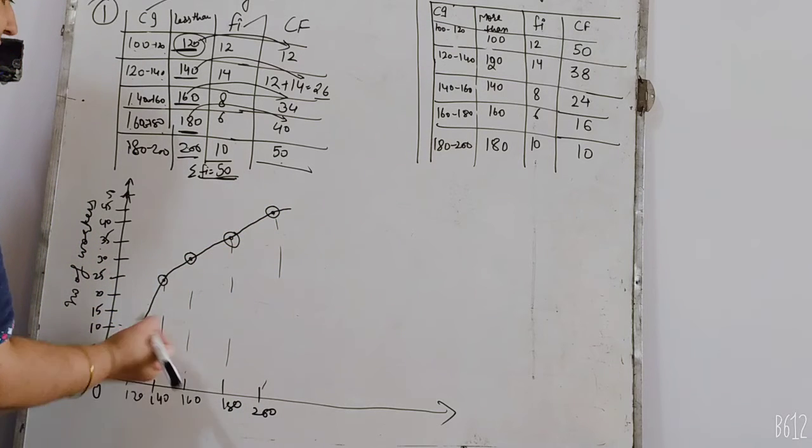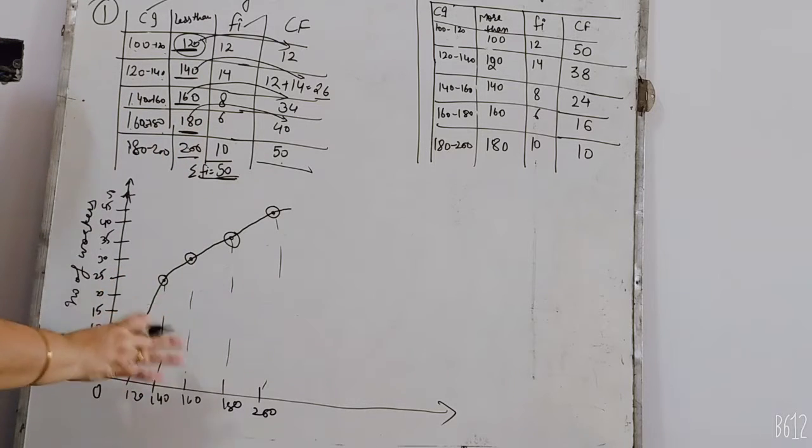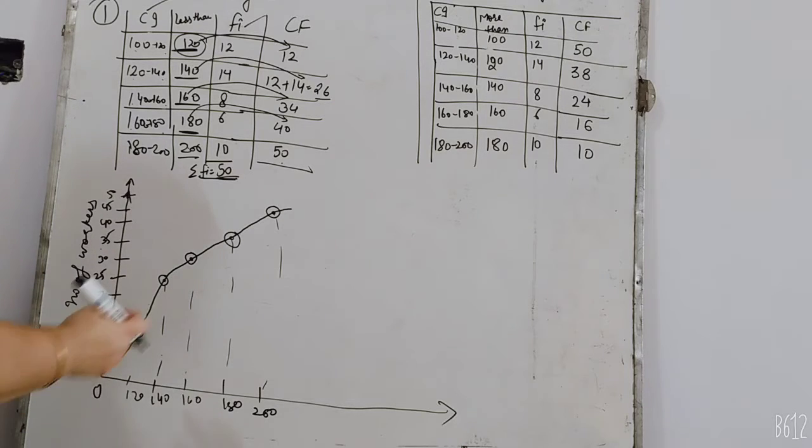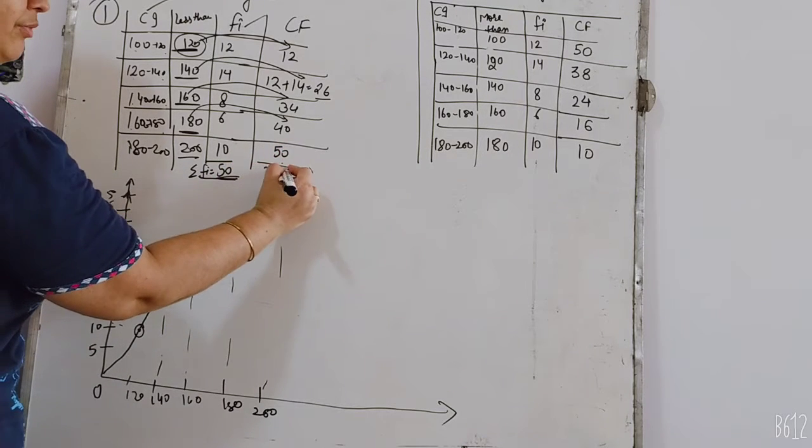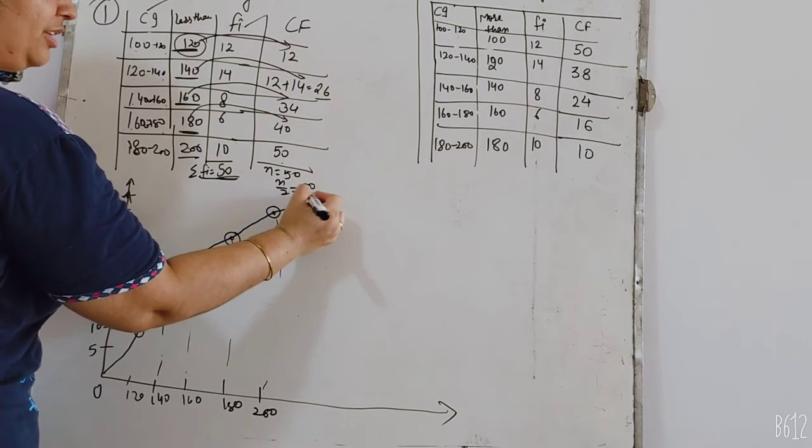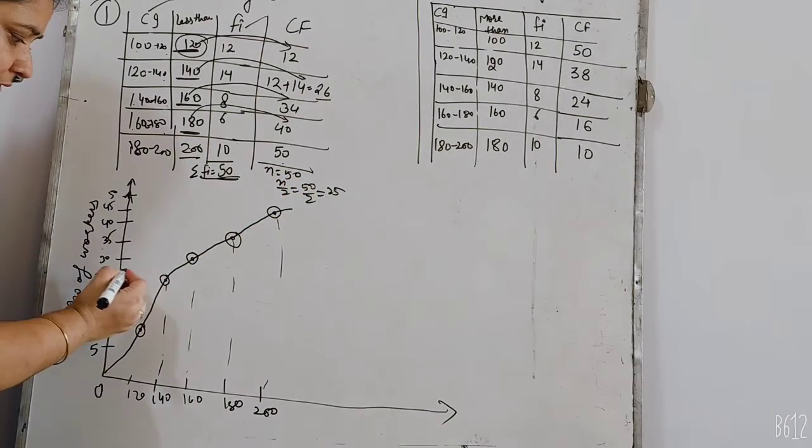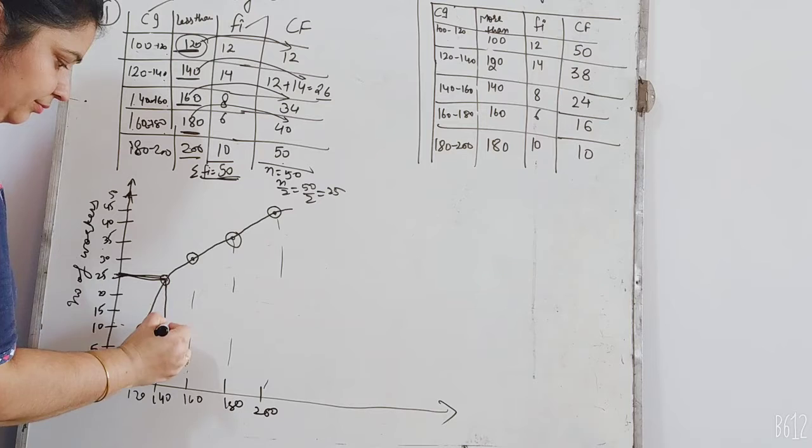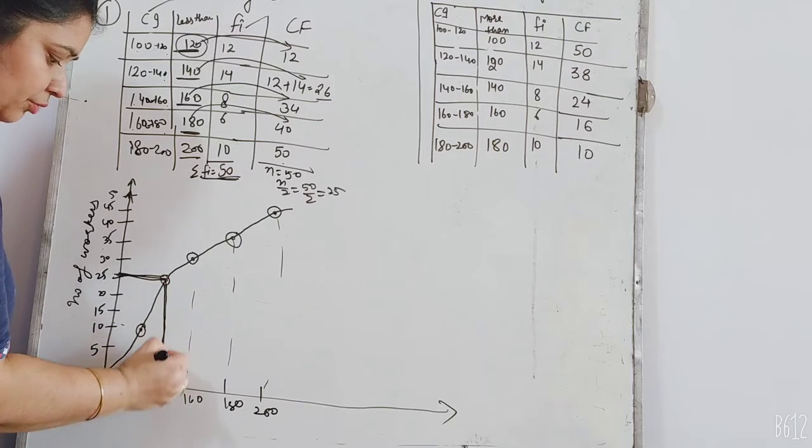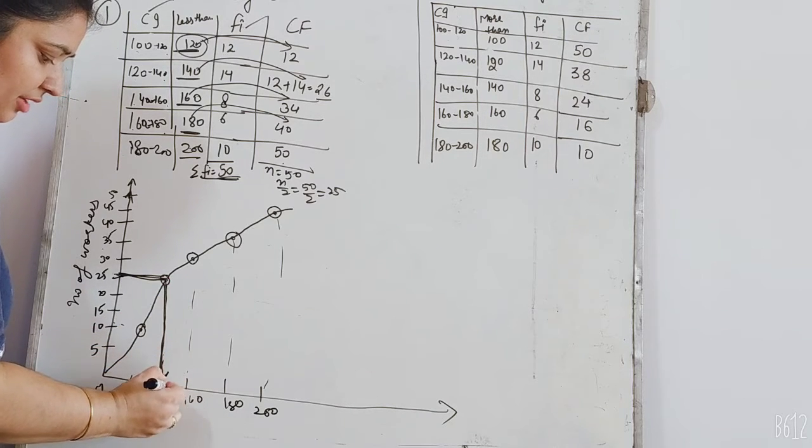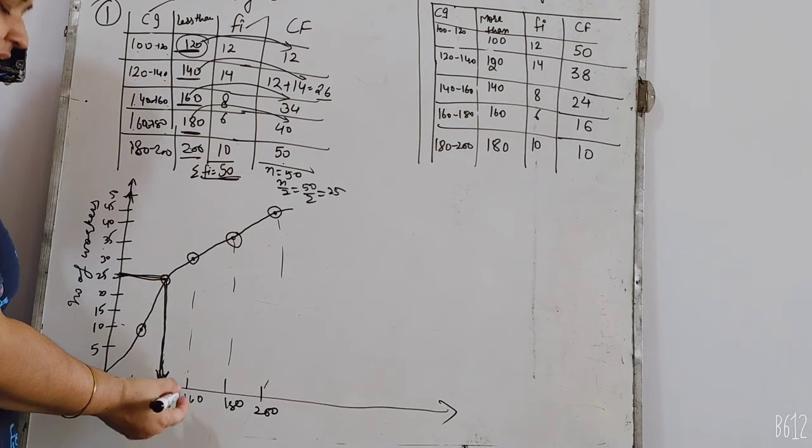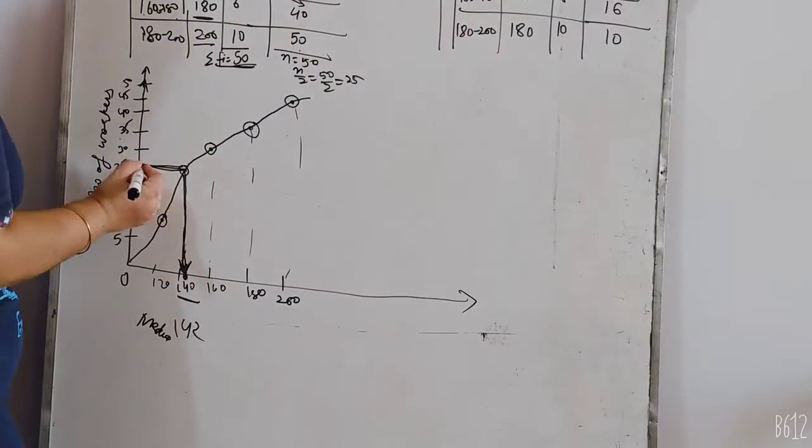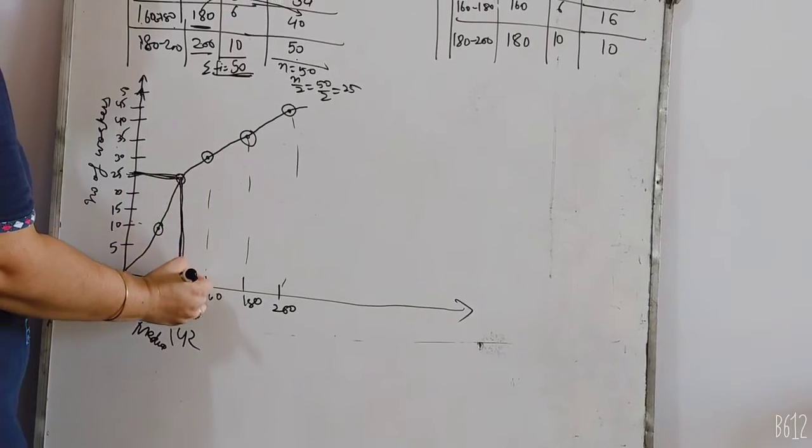I have drawn the less than ogive. Find median of this. How many N? N by 2. I have 50, so here put 25 on top. The answer - I think 142 के करीब इसका answer आएगा, यह आपका answer होगा. मैंने actually graph नहीं है मेरा dotted graph है तो यह roughly draw कि इसके 142 के approximately median आएगा.